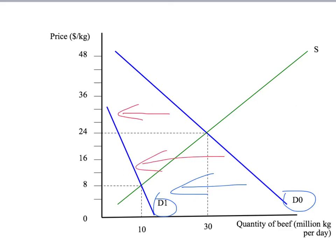What did this do to our equilibrium? Well, our new equilibrium price is down here at $8 per kilogram. And our new equilibrium quantity is a much lower, 10 million kilograms of beef per day.